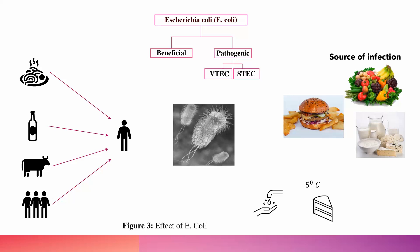However, there are some pathogenic E. coli strains that can cause human illness. Among these pathogenic strains, there is one group capable of producing toxins, known as the verocytotoxin-producing E. coli, or VTEC, and another known as the Shiga toxin-producing E. coli, or STEC.